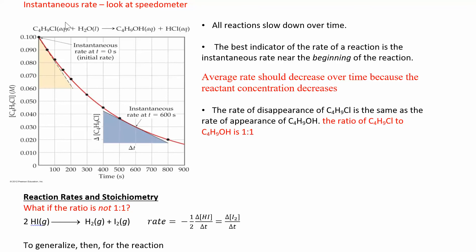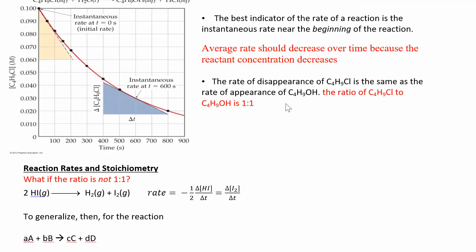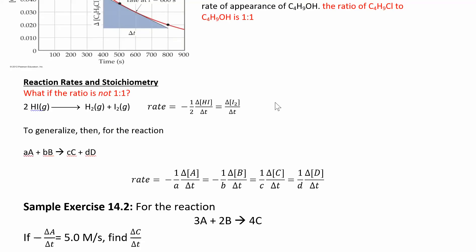In this reaction — the same one from the last example — for every one mole of this reactant, we make one mole of this product. The stoichiometric ratio is one to one, so the rate of disappearance of this reactant is equal to the rate of appearance of the product. That's not always going to be true. If you have a different stoichiometric ratio, your reactant could decrease at a different rate than your product is increasing. So you need to look at the stoichiometry of the reaction.